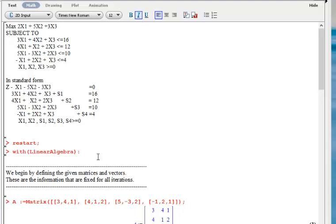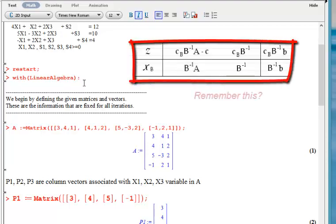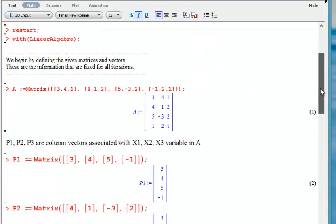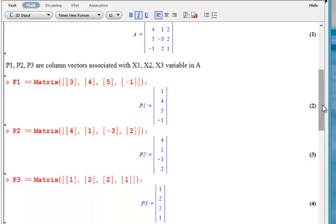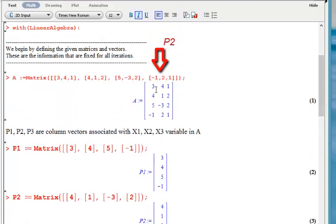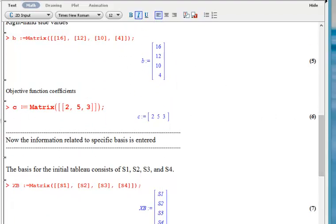I have used Maple commands to start the problem using the linear algebra library that allows me to do matrix manipulation. The A matrix is defined. The elements of the A matrix P1, P2, and P3 are defined. The right-hand side values, the resources are defined, and the cost or profit vector C has been defined based on the given information in the problem.